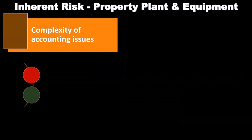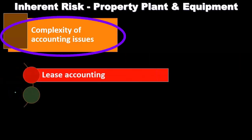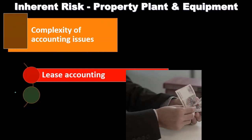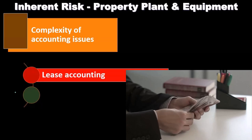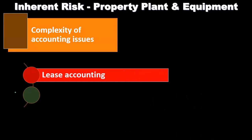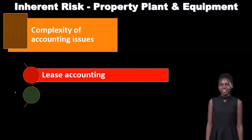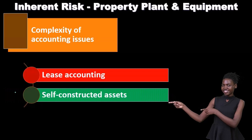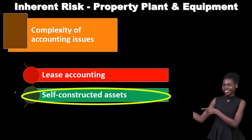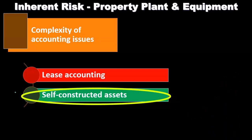Regarding complexity, a straightforward transaction — such as buying property, plant, and equipment and paying cash — is not too difficult to consider, even if it's material. If they financed part of it, that's still fairly common. However, leasing — particularly a capital lease — or self-constructing the capital asset are two types of transactions that can be far more complex.